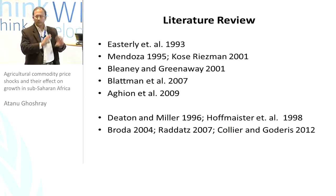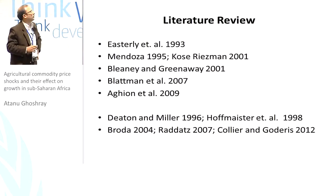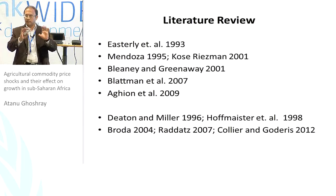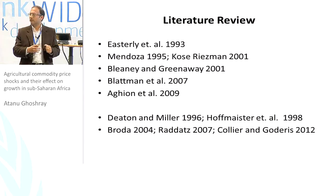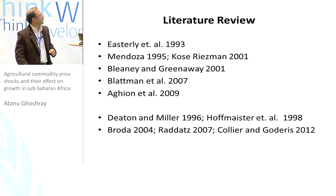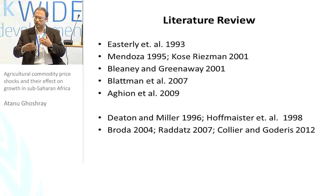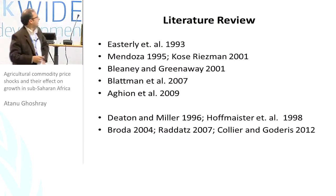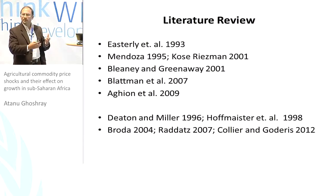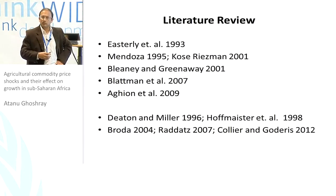For the literature review — which is quite substantial — Easterly in 1993 in the Journal of Monetary Economics found that commodity terms of trade have a significant effect on output volatility using growth regressions. Mendoza, Coase, and Reisman used calibrated general equilibrium models and found similar results. Blini and Greenaway used panel data and found a negative relationship between variations in commodity terms of trade and output. Blackman using historical data from 1870 to 1939 found similar results, and Aguillon using GMM also found a strong relationship between commodity terms of trade and output volatility.